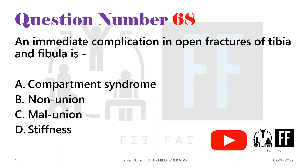Out of the options, option B (non-union) and option C (malunion) are always complications of the remodeling phase, that is the later phase of fracture healing. Option D (joint stiffness) also cannot be the answer because it can never occur as an immediate complication.